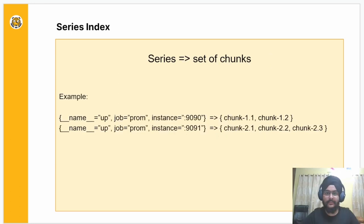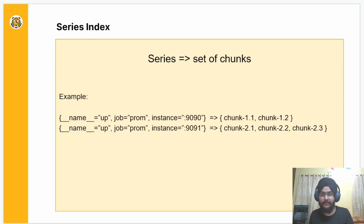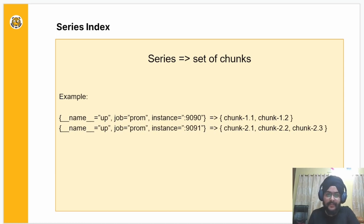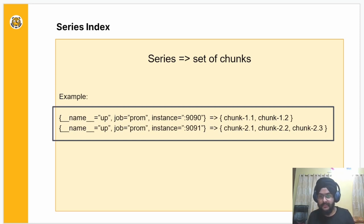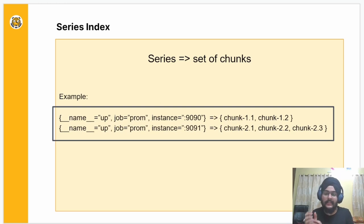A series index is a relationship between a series and the set of chunks that belong to that particular series. For example, the first series contains two chunks and the second series contains three chunks. None of these chunks are shared between two series — each chunk is specific to the series itself.